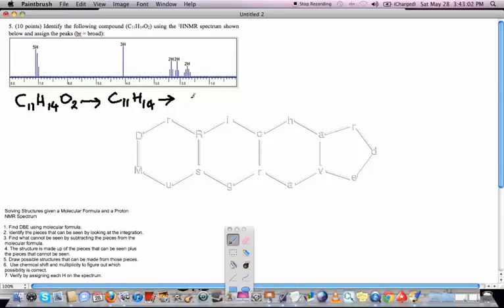So it would be C11, H14. Now we'll see what it is. If it was saturated, it would be C11, H24. That's 11 times 2 plus 2 is 24. Double-bond equivalents. It's going to be 24 minus 14 divided by 2 equals 5.